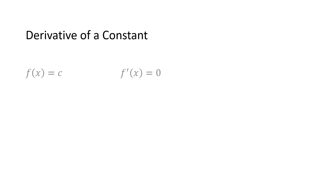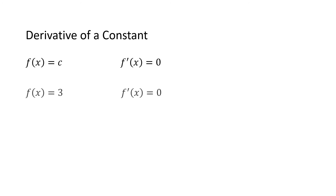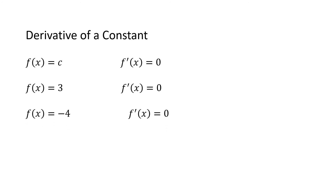Now we go to the derivative of a constant. For f(x) = c, where c is any real number constant, the derivative of a constant is simply 0, so f prime of x = 0. For example, if f(x) = 3, then f prime of x = 0. If f(x) = −4, its derivative is also 0. And if f(x) = 15, f prime of x is still equal to 0.